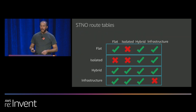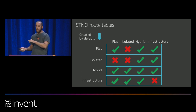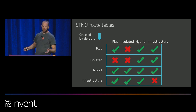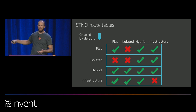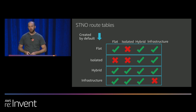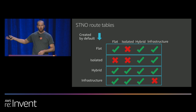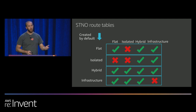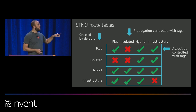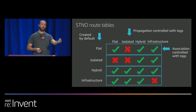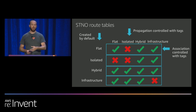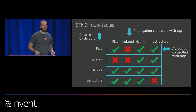STNO has four default route tables: flat, isolated, hybrid, and infrastructure — roughly dev VPCs, production VPCs, hybrid infrastructure, and shared infrastructure. This aligns to Control Tower and landing zone — over time this will build into the tool used with Control Tower and landing zone for hundreds of accounts that need to connect automatically. For the spoke, if they want to join a Transit Gateway network, all they have to do is tag things — tag your subnets and VPCs and it all happens automagically.